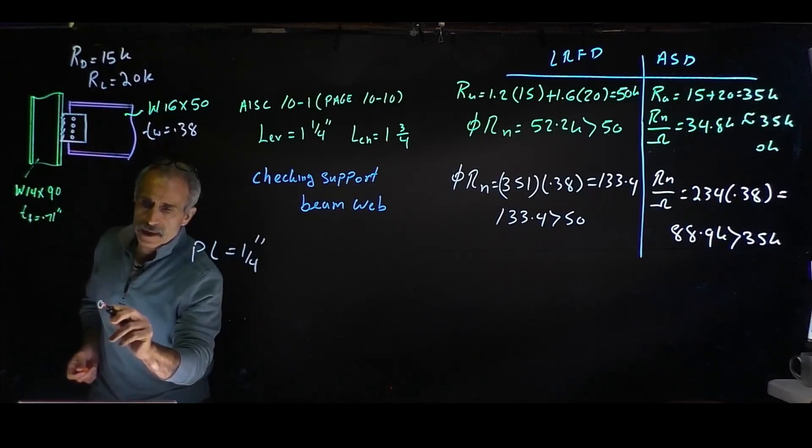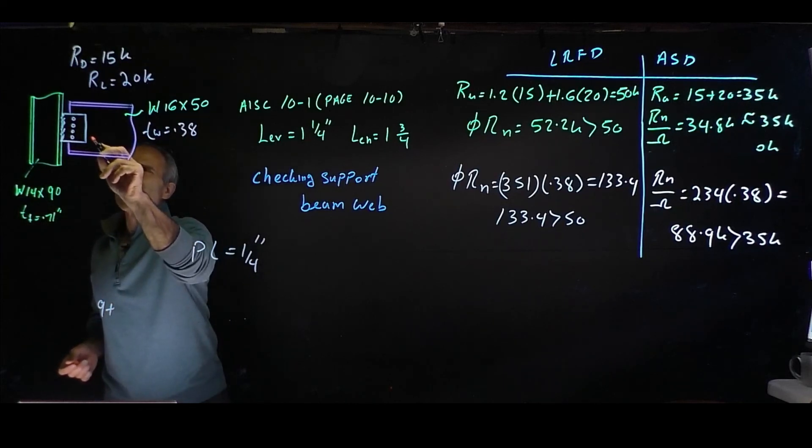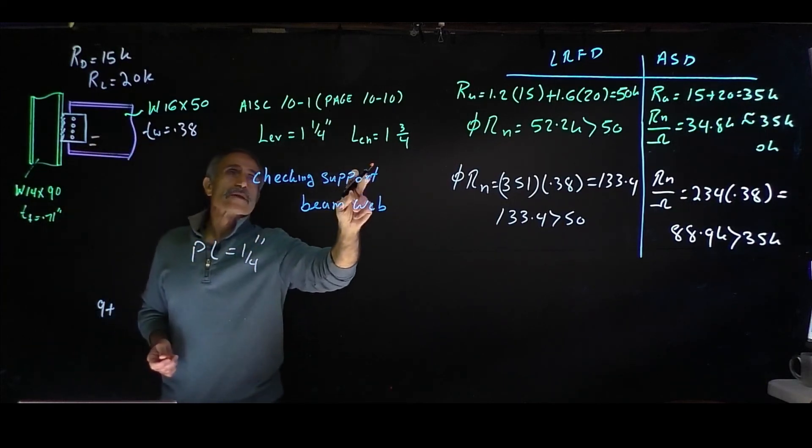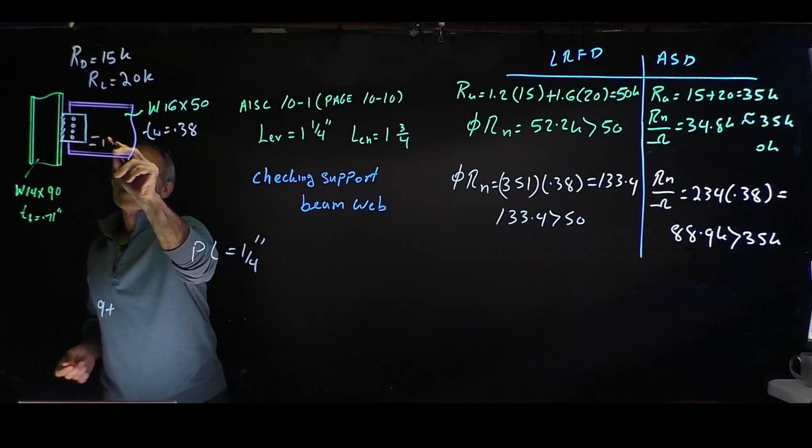Let me just add it up here. That's nine, and we said Lev was 1-1/4.